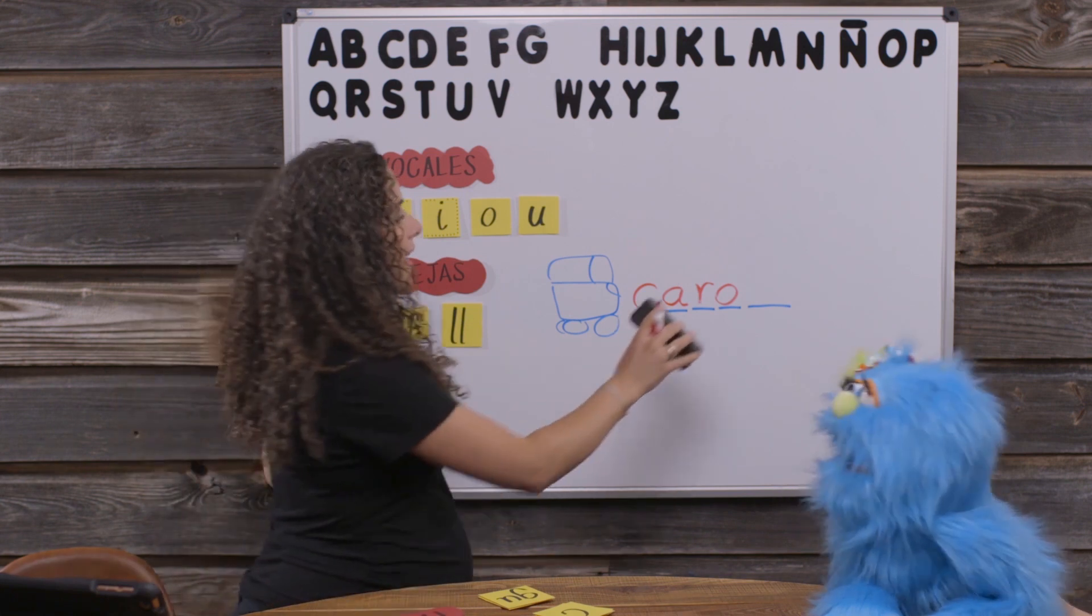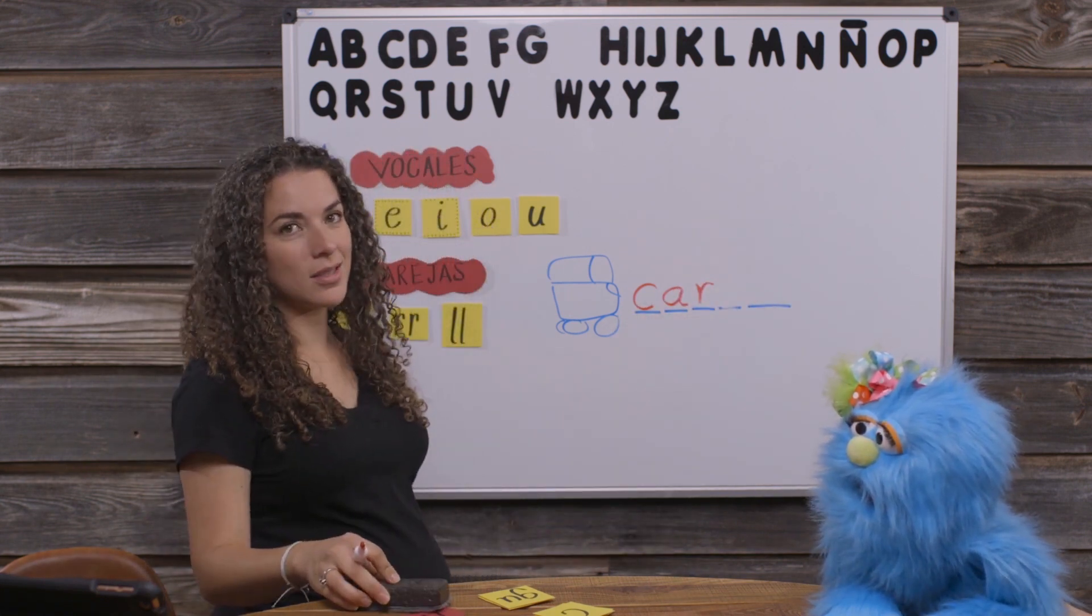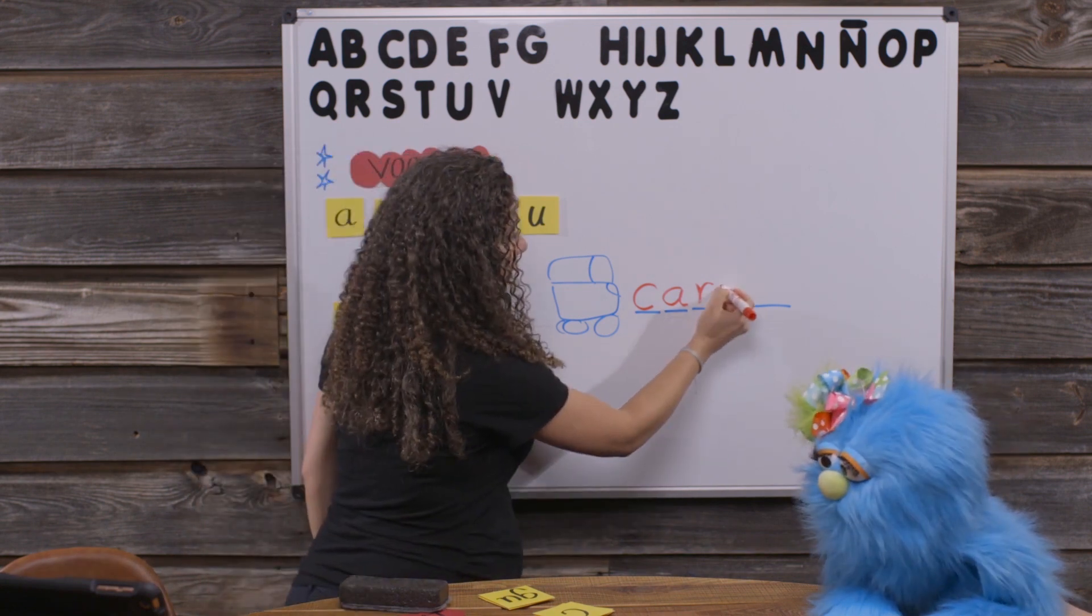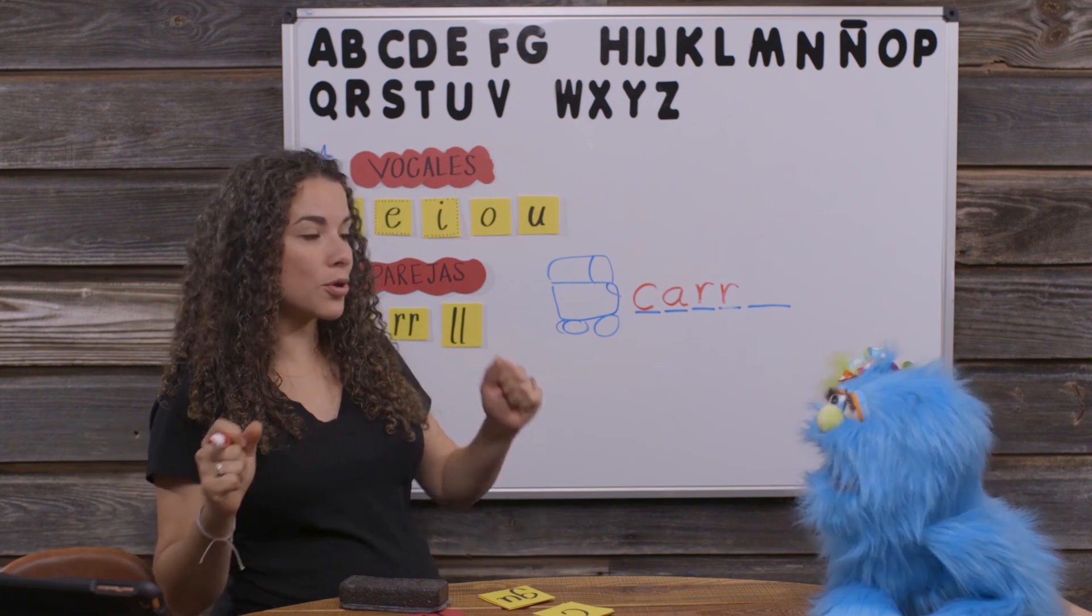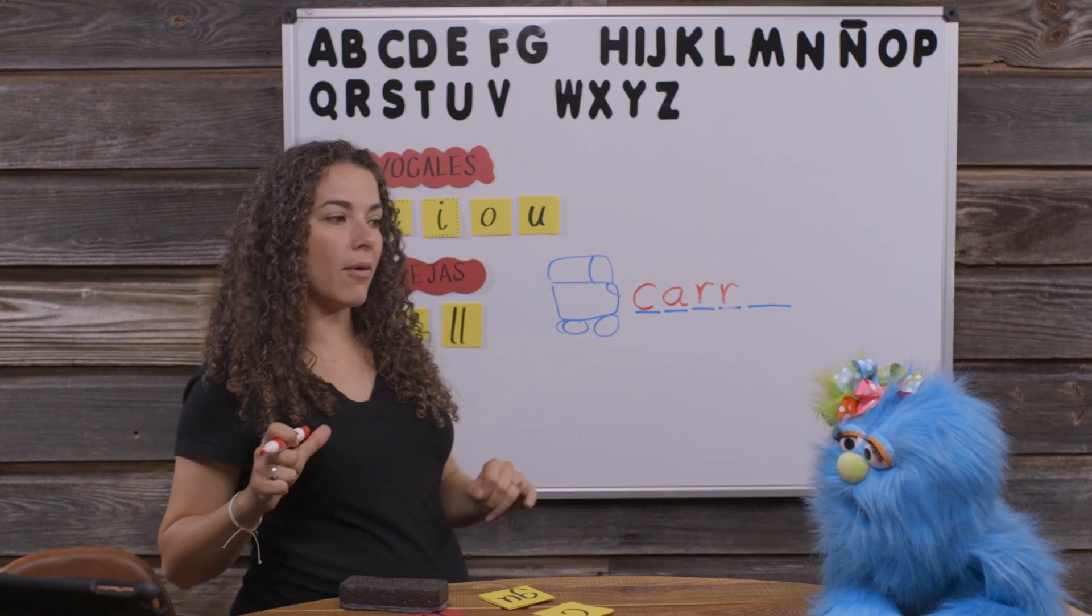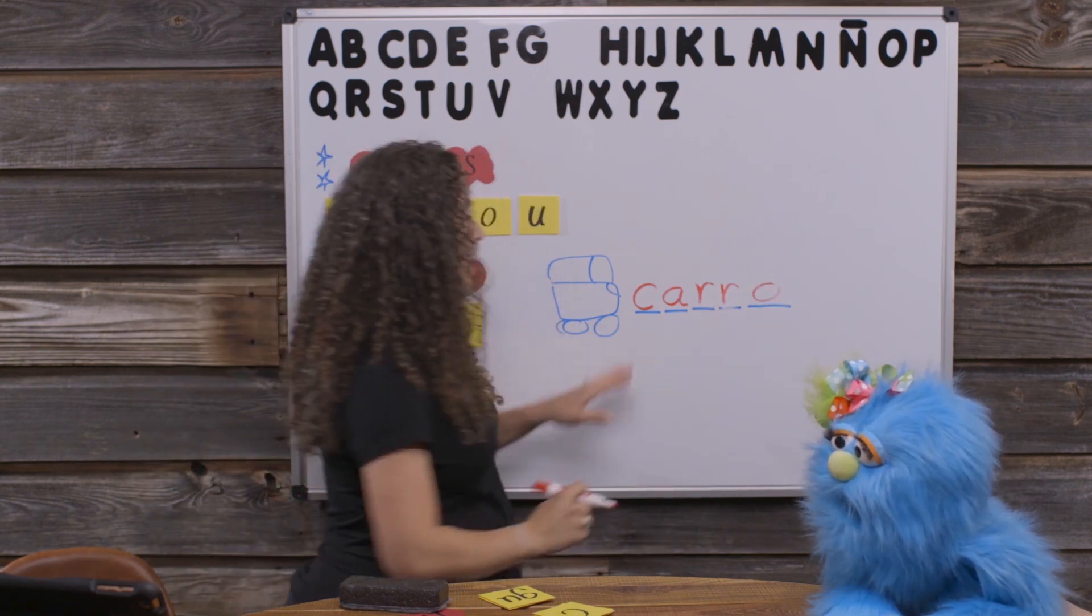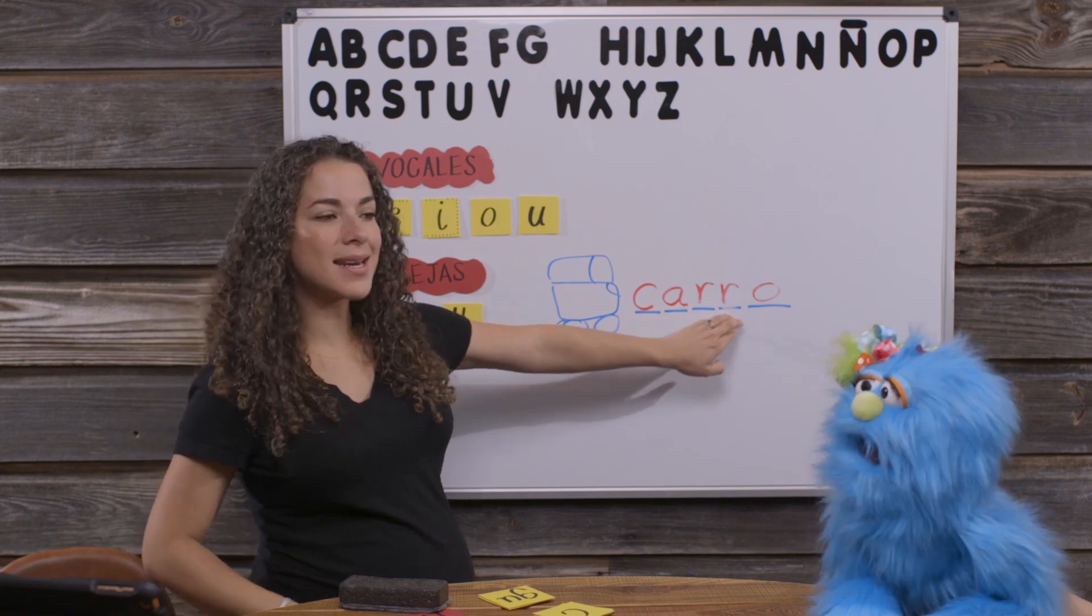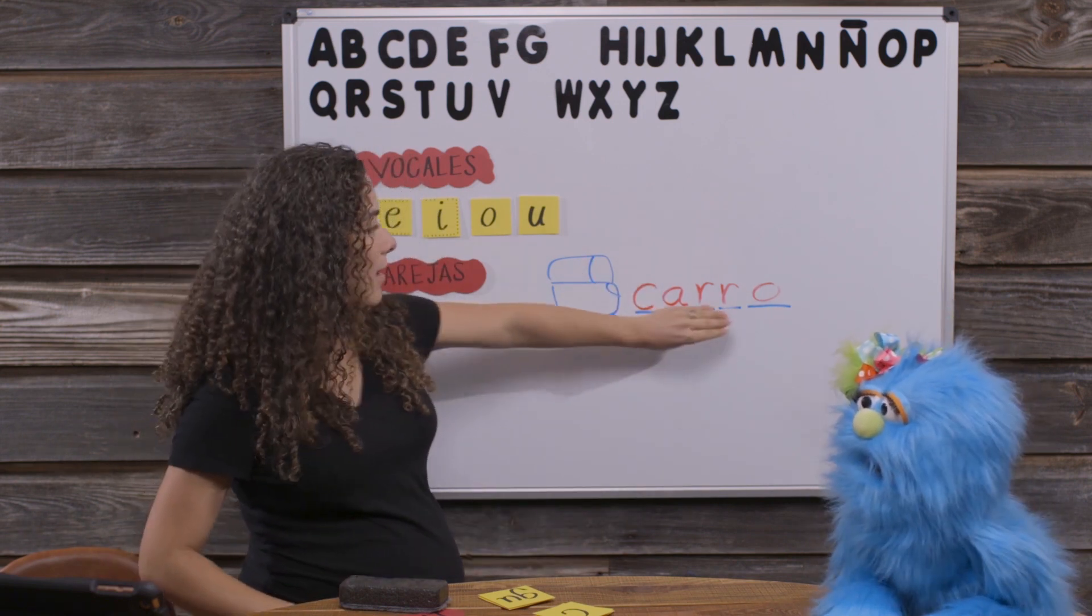Si, doble R. Doble R sounds how? C-R-R. And what vowel? O! C-R-R-O. Ca-ro, ca-ro.